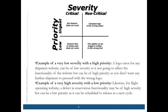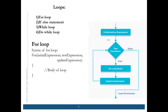Moving on — we have four types of loops available: for loop, if-else, while loop, and do-while loop.